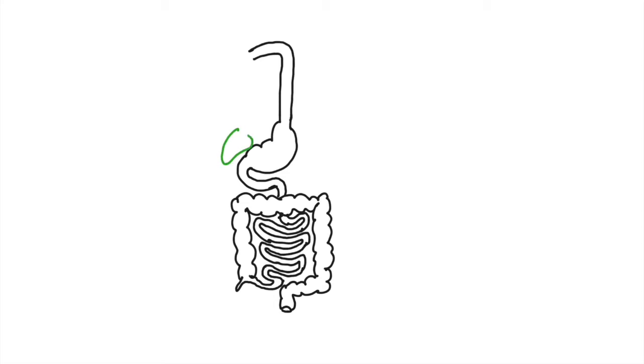Now let us draw the accessory glands. We begin by drawing the liver on the stomach, then the gallbladder next to that. Between the small intestine and the stomach is the pancreas, and in the oral cavity is the salivary gland.